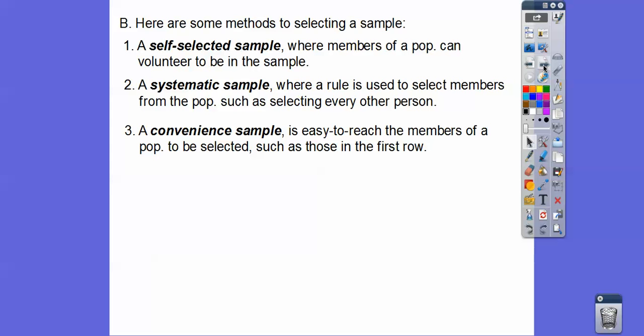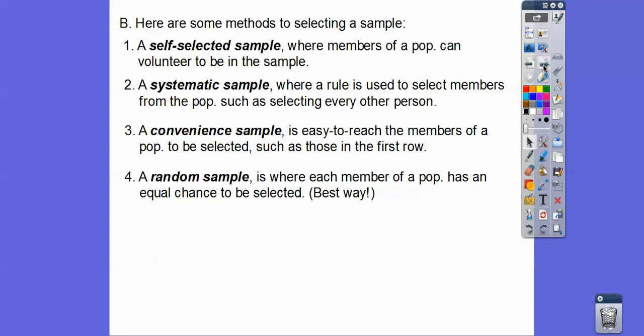A convenience sample, it's easy because it's easy to reach members of a population to be selected, such as selecting those in the first row. Or how about this, you go to a grocery store to interview people. That's nice and convenient. If you're interviewing people that look friendly, you'd be more inclined to interview those kind of people. You probably wouldn't want to interview some big burly guy that looks mad at the world, or something that just looks a little shifty. That would be convenience sampling.